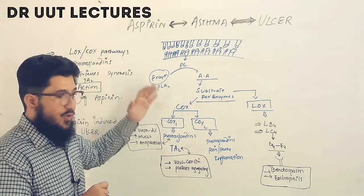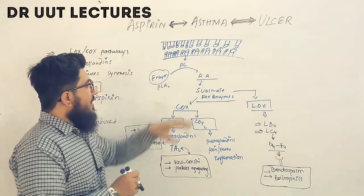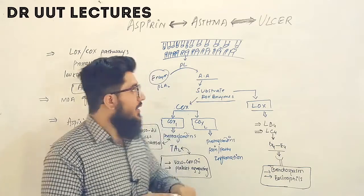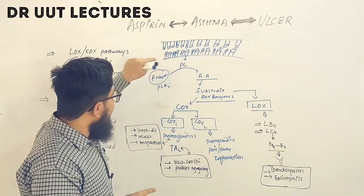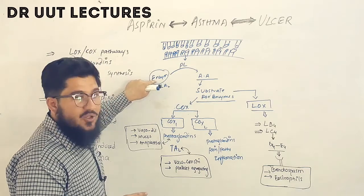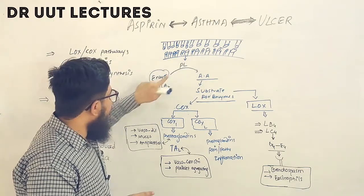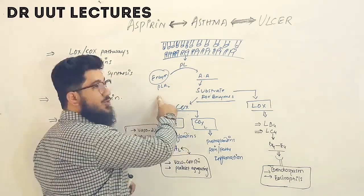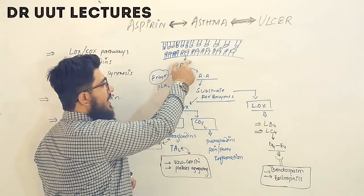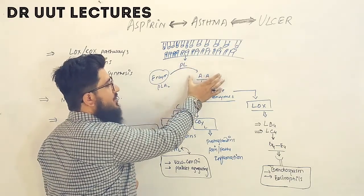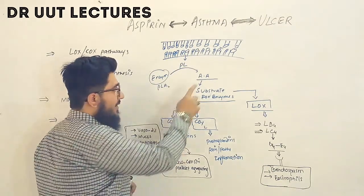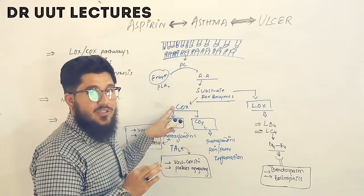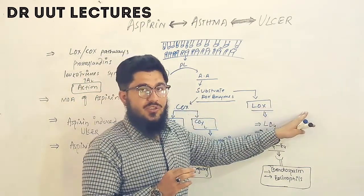Our cell membrane is made up of a phospholipid bilayer. The enzyme phospholipase A2 acts on these phospholipids and produces arachidonic acid. This arachidonic acid is a key substrate for enzymes like cyclooxygenase (COX) and lipoxygenase (LOX), both of which act on it to produce different products.